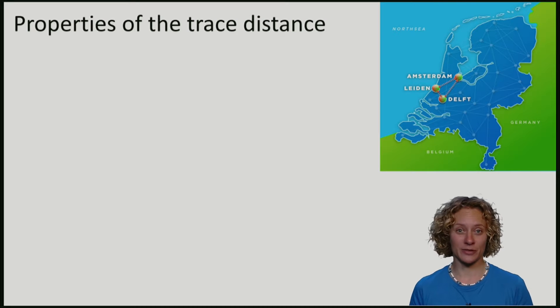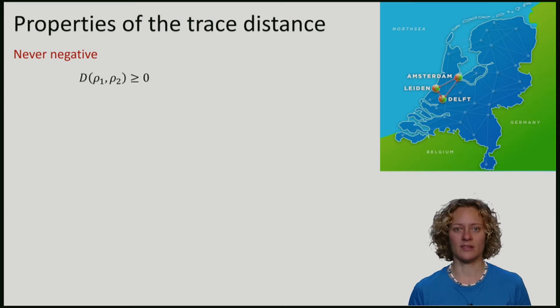Let's consider here three cities in the Netherlands. Delft, where I am right now, Leiden and Amsterdam. As you might guess, a distance is always positive. If I walk somewhere, I have to cover some ground. And indeed, the trace distance is always positive.